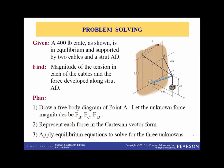In this second problem, a 400-pound crate is in equilibrium supported by two cables AB and AC, and the strut AD. Find the tension in each of the cables and the force developed along strut AD. We'll draw a free body diagram of point A, represent the unknown forces F_B, F_C, and F_D as Cartesian vectors, and apply the equilibrium equations to solve for the three unknowns.